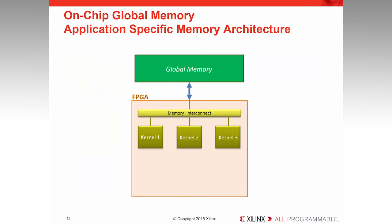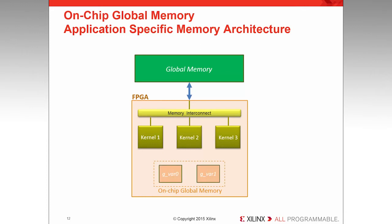The STXL implementation of kernels communicating through on-chip global memory is shown. In this implementation, the compute units for kernels 1, 2, and 3 are connected to a memory bus that provides access to off-chip global memory. In addition, the FPGA contains an on-chip global memory composed of two buffers, GVAR0 and GVAR1. During compilation, STXL analyzes the usage of GVAR0 and GVAR1 and automatically generates the best implementation as an application-specific memory subsystem containing dedicated kernel-to-memory data paths.